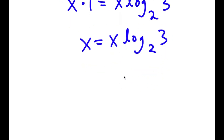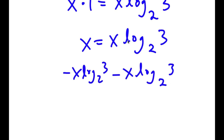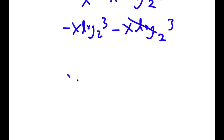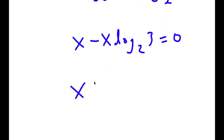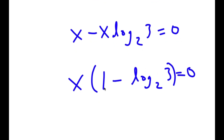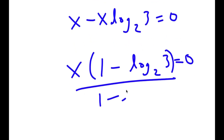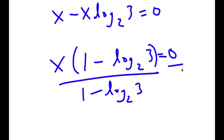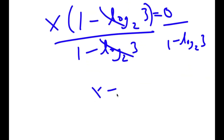Now I'm going to subtract x times log base 2 of 3 from both sides. So I get x minus x times log base 2 of 3 is equal to 0. If I factor out x, I get x times (1 minus log base 2 of 3) is equal to 0. And if I divide both sides by (1 minus log base 2 of 3), these two cancel out and I'm left with x is equal to 0.